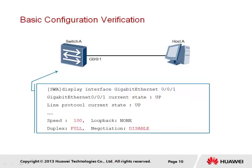After the configuration changes have been made on the switch, we can use the display interface Gigabit Ethernet 0-0-1 command to view the current status of this interface in terms of its current state, as well as verify that the changes made have taken effect. In this case, we can clearly see that the supported speed is 100 Mbps and full duplex is supported, and that auto-negotiation has in fact been disabled.